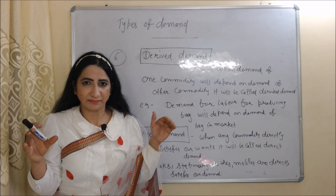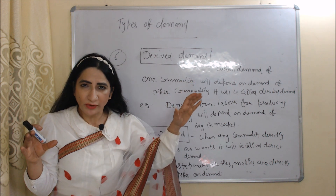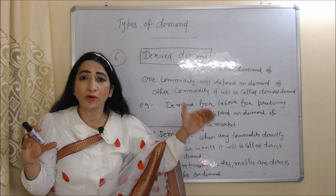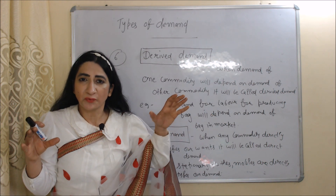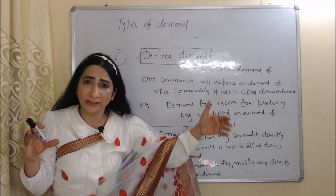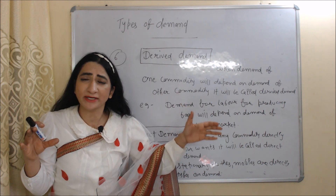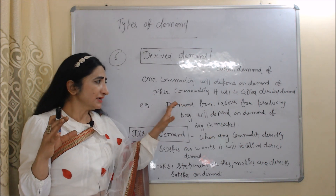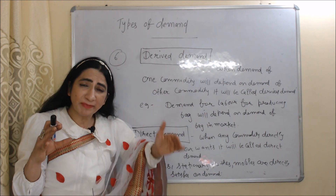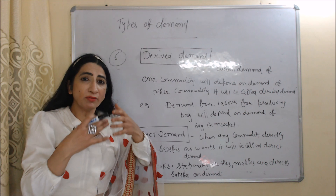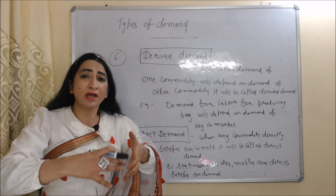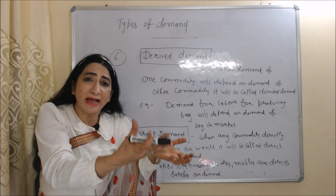Next is derived demand. When the demand of one commodity depends on the demand of another commodity, it will be called derived demand. For example, demand for labor for producing bags will depend on demand for bags in the market. It means how much labor you hire for producing bags all depends on how many people are buying your bags in the market.